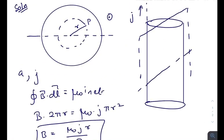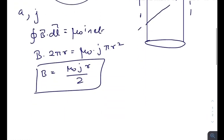So B equals μ₀jr divided by 2. This is the magnitude of the magnetic field at a distance r from the central axis, and the direction of the magnetic field is tangential at that point. Now we'll use this formula to find out the force of interaction between the two halves.